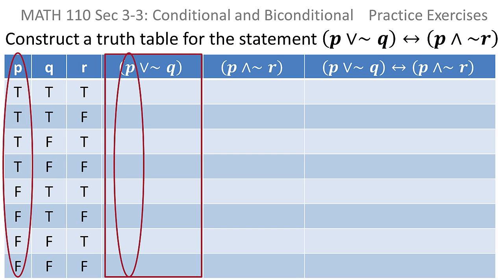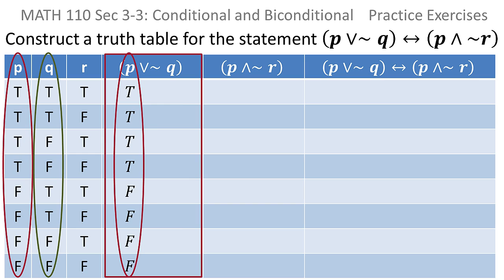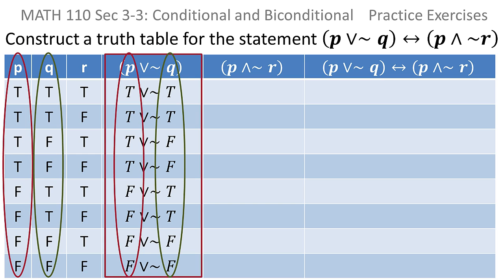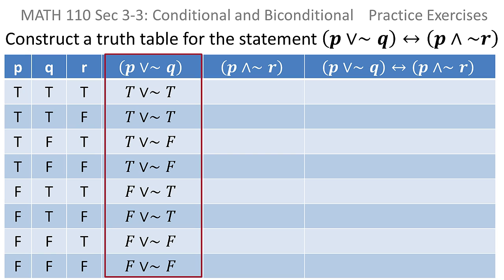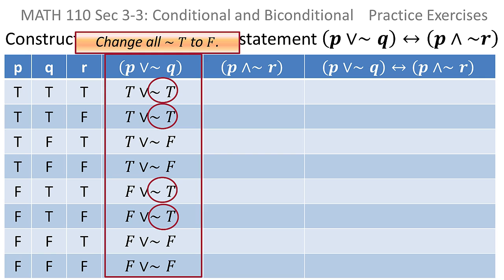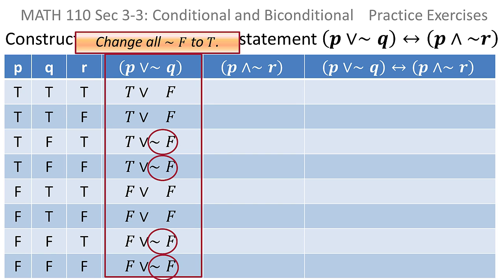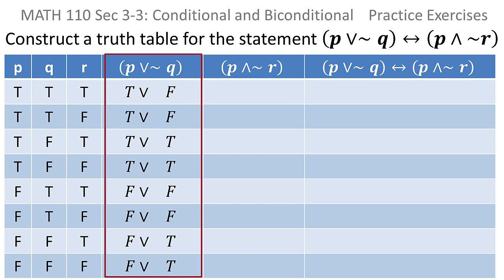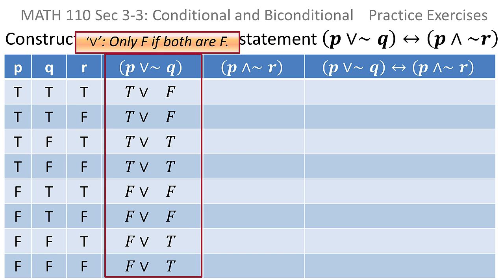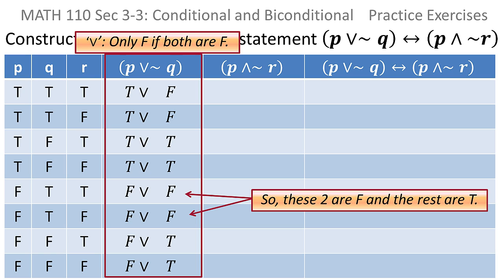I'll start with a column that deals with the OR. All I need to do is take the P column and move it over, take the Q column and move that over, and then look at what I have left. I have several not-trues, and I know that not-true is false. I also have several not-falses, and I know that would be true. When all that simplification is done, I'm left with an OR, and I know that for an OR it's only false if both are false. Scanning down, there are only two rows where both are false, so those two would be false and the others would be true.